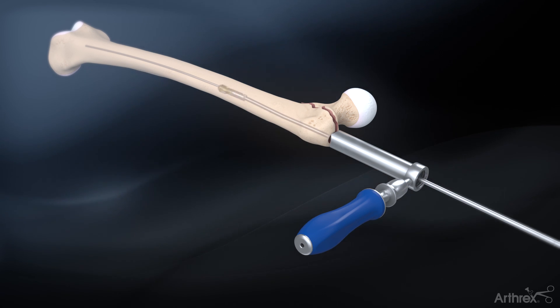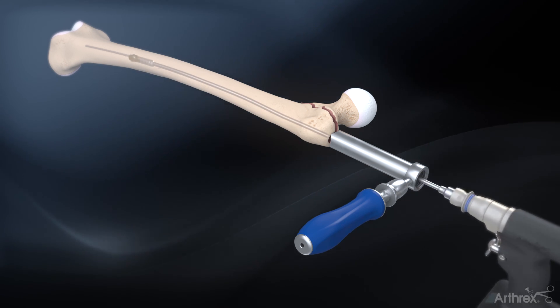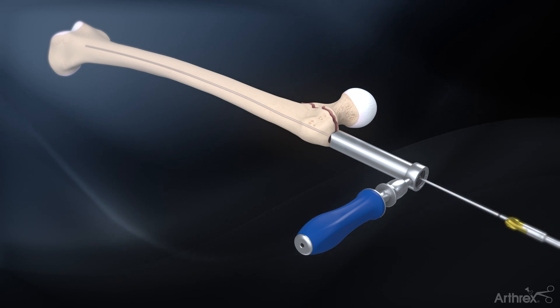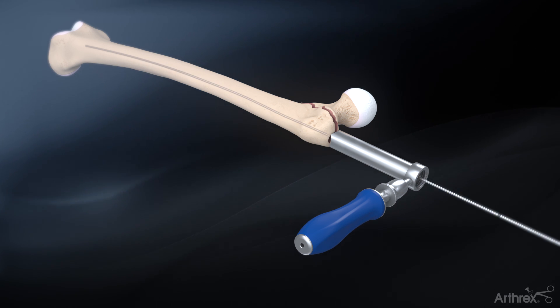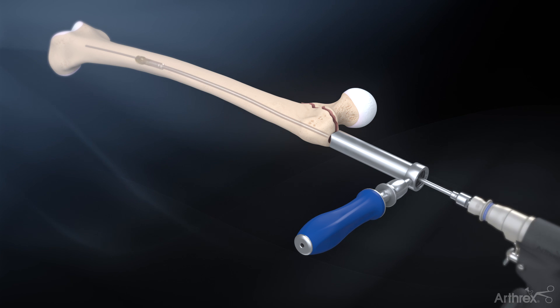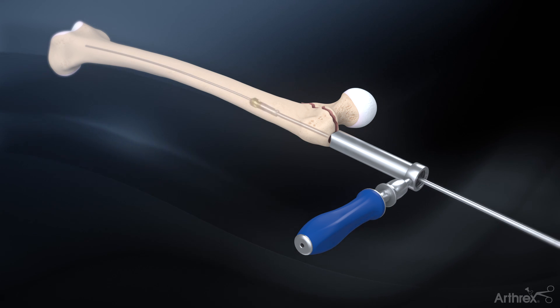Begin reaming with the 8 mm end cutting reamer over the ball nose guide wire. Sequentially ream larger with the side cutting reamers until cortical chatter is achieved. It is recommended to ream at least 1.0 to 1.5 mm over the desired nail diameter.